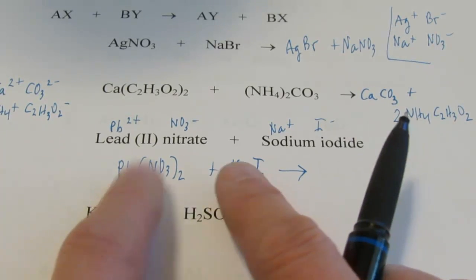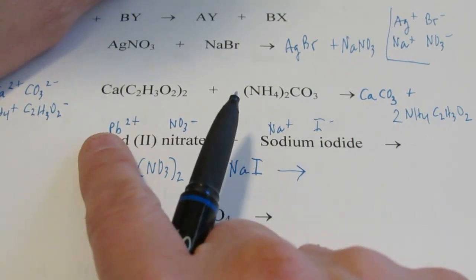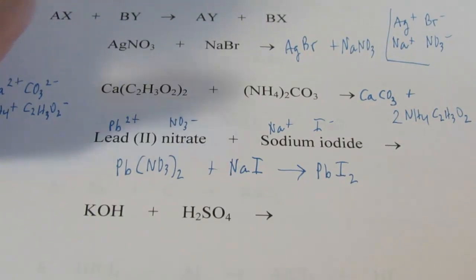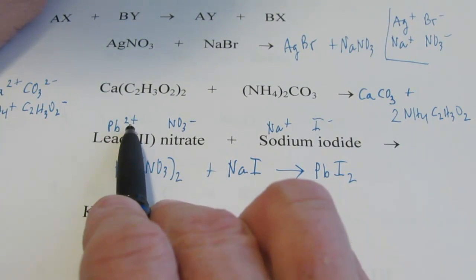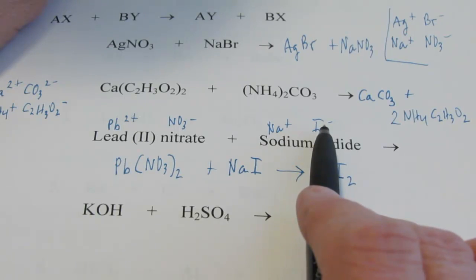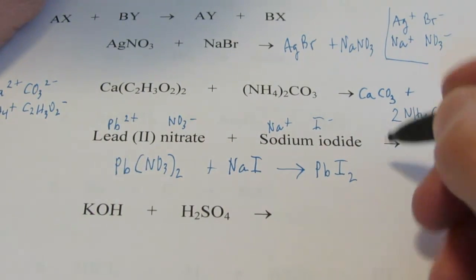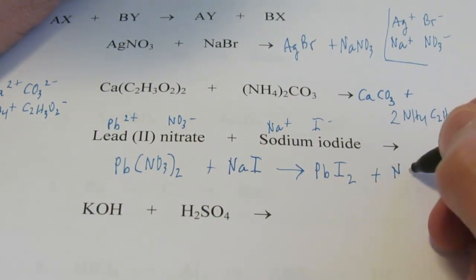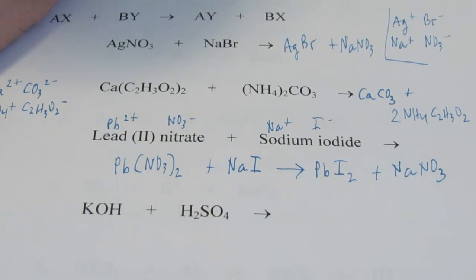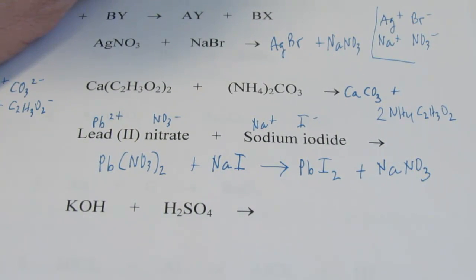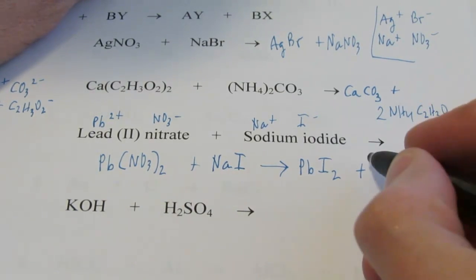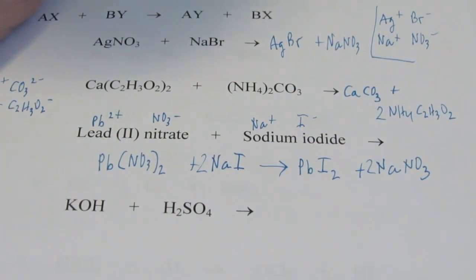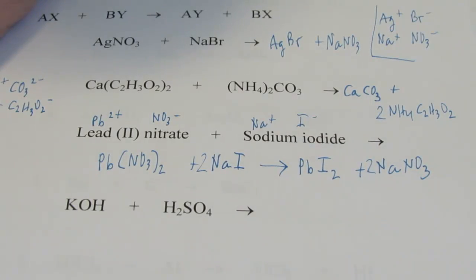So lead will be with iodine and sodium will be with nitrate. So lead's 2 plus and iodide is 1 negative. We'll form PbI2, not PbI. Lead's 2 plus, iodide's 1 negative. So we need 2 of those bad boys to balance out that charge. And sodium is with nitrate. Sodium's 1 plus, nitrate's 1 negative. That one's easy. NaNO3. Yes, I know it doesn't balance. Give me a minute here. 2 nitrates. Let's put a 2 there. I need 2 sodium. I'm going to put a 2 there. There we go. I'm done. It's a lot like your homework coming in.